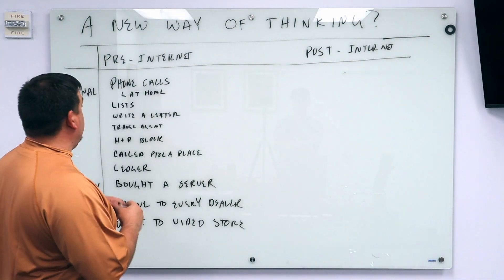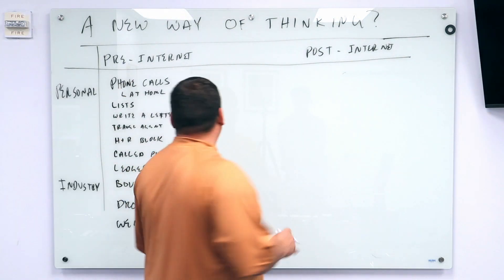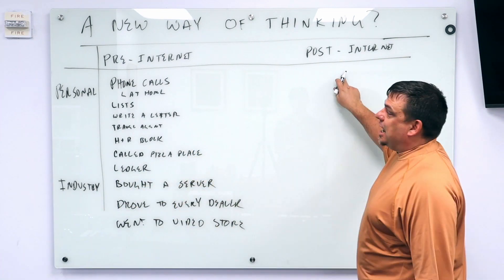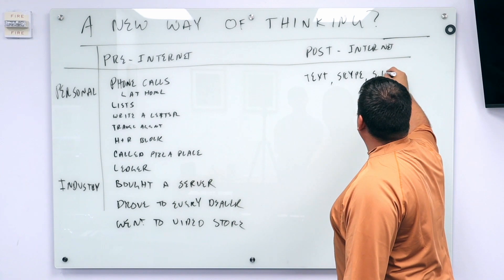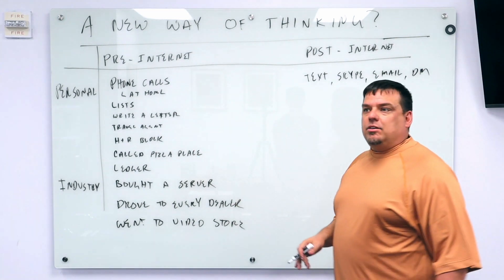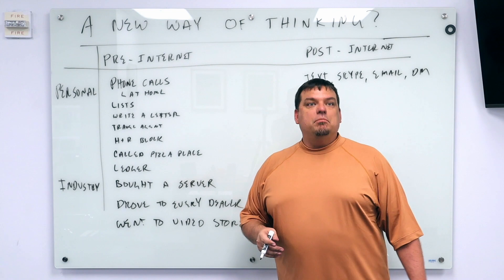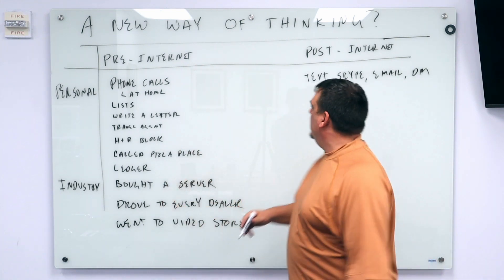These are all the things that we did in the pre-internet days, in our personal lives. What do we do today? How do we talk to our mom? We text, we Skype, we email, DM. How do we communicate that your mom needs you to pick up milk, or needs someone to pick up milk?